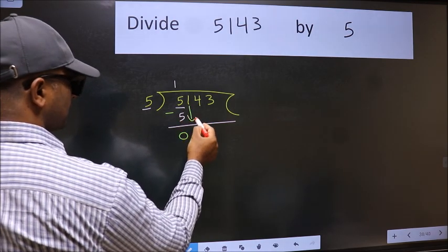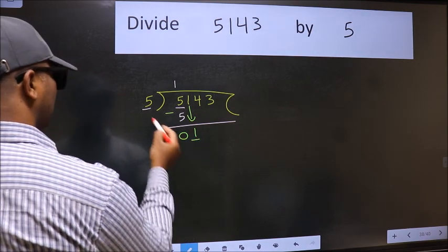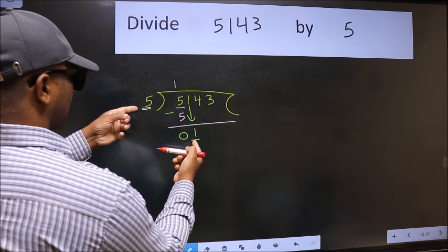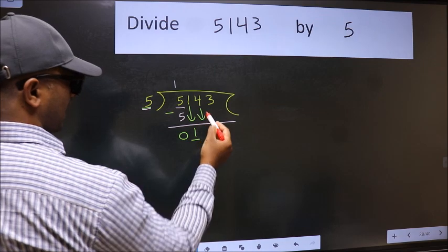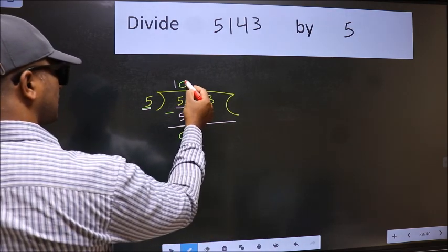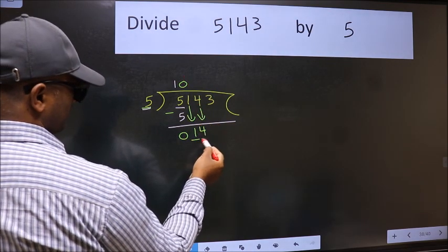After this, bring down the beside number. So 1 down. Now here we have 1 and here 5. 1 is smaller than 5, so we should bring down the second number. And the rule to bring down the second number is we should put 0 here. Then only we can bring this number down. Now 14.